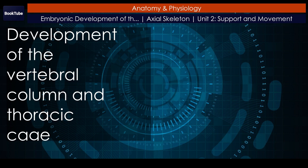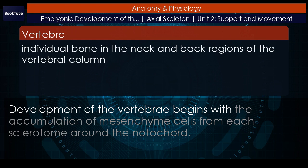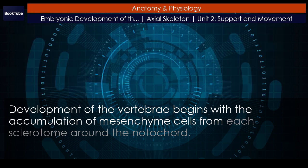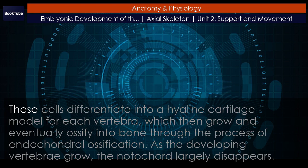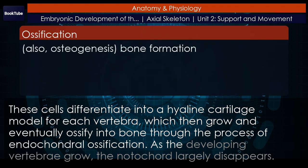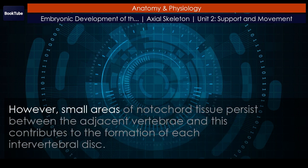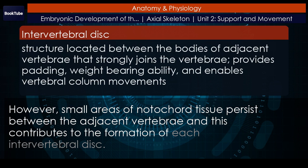Development of the vertebral column and thoracic cage. Development of the vertebrae begins with the accumulation of mesenchyme cells from each sclerotome around the notochord. These cells differentiate into a hyaline cartilage model for each vertebra, which then grow and eventually ossify into bone through the process of endochondral ossification. As the developing vertebrae grow, the notochord largely disappears. However, small areas of notochord tissue persist between the adjacent vertebrae and this contributes to the formation of each intervertebral disc.